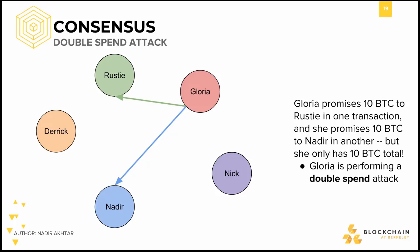Let's say Gloria is purchasing tons of laptops and is willing to pay both Nadir and myself 10 bitcoins for our laptops. Gloria promises me 10 bitcoins in one transaction and promises 10 bitcoins to Nadir at the same time. This is represented by the green arrow from herself to me, the green circle, and by the separate blue arrow from herself to Nadir, the blue circle. However, she only has 10 bitcoins in total. Her invalid transaction evades detection because she only tells one person about each transaction — the person receiving the bitcoins. I, Rusty, only know about my incoming bitcoins and Nadir only knows about his. Derek and Nick, the other entities in the network, know nothing about either transaction.